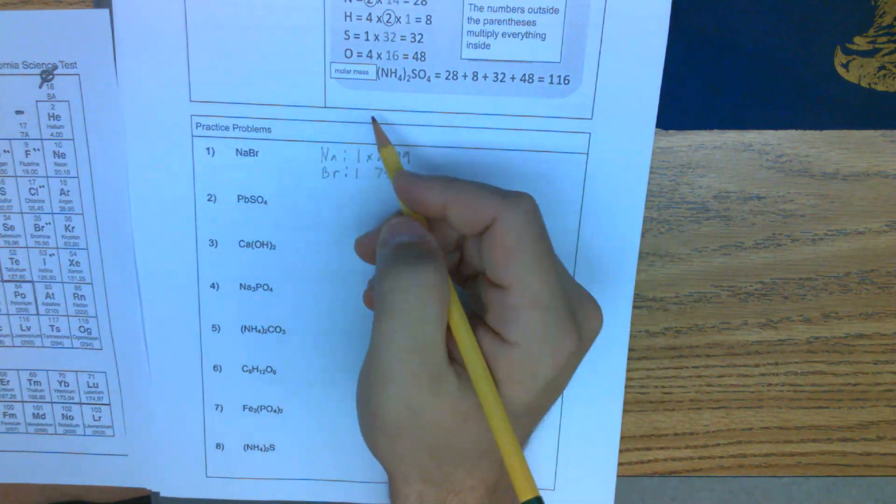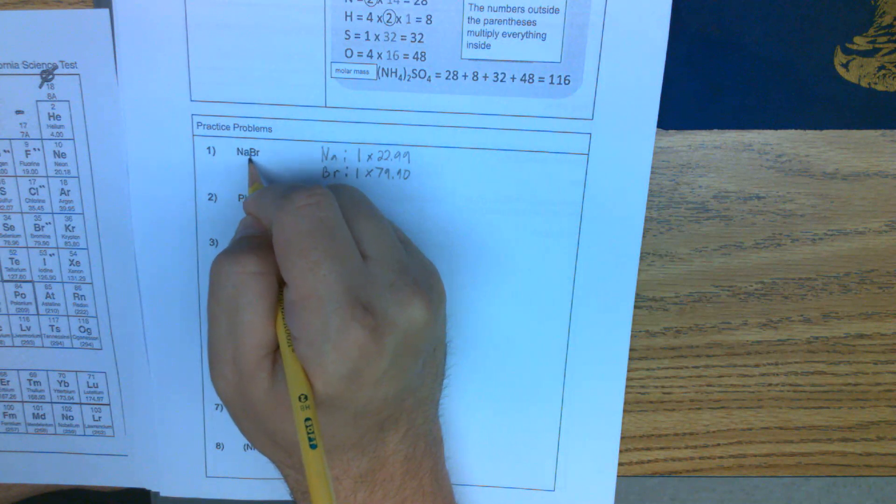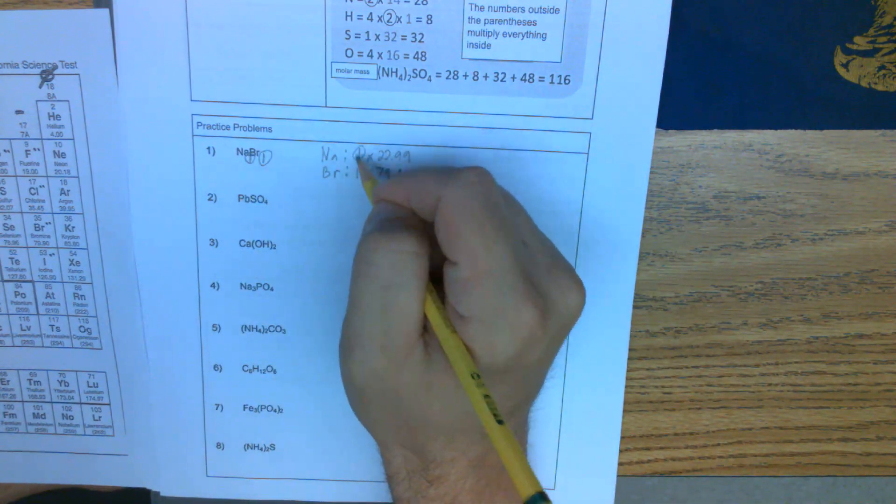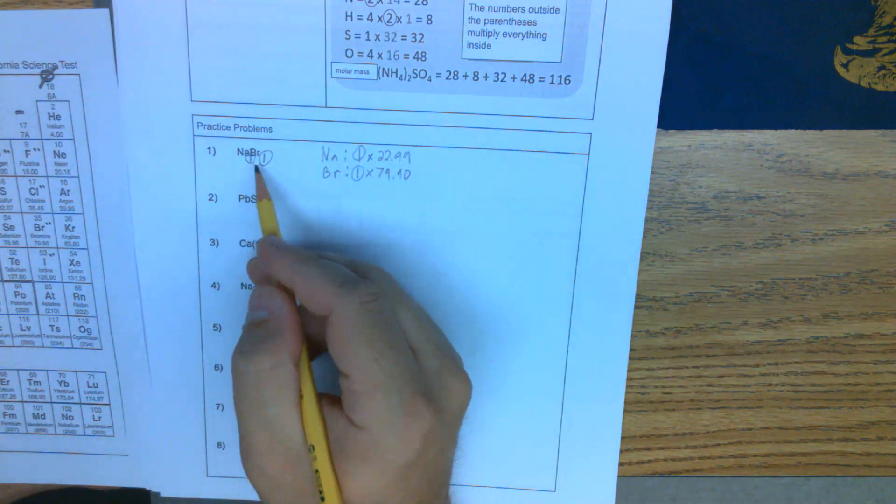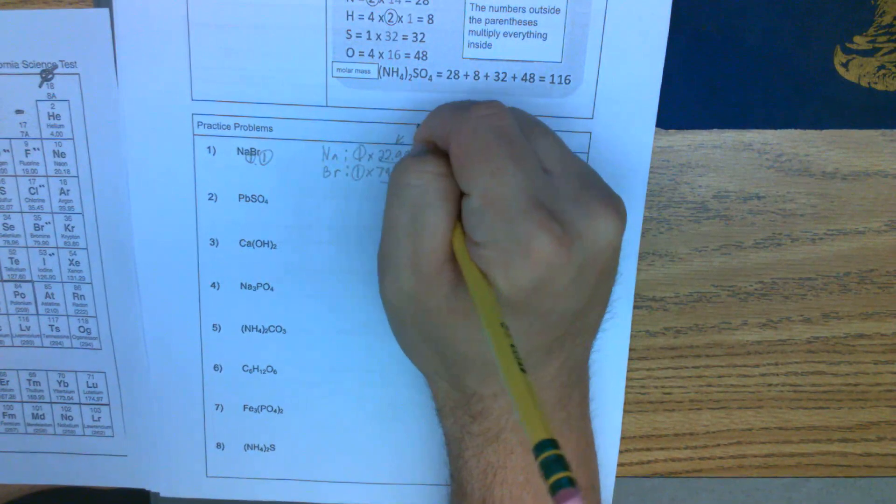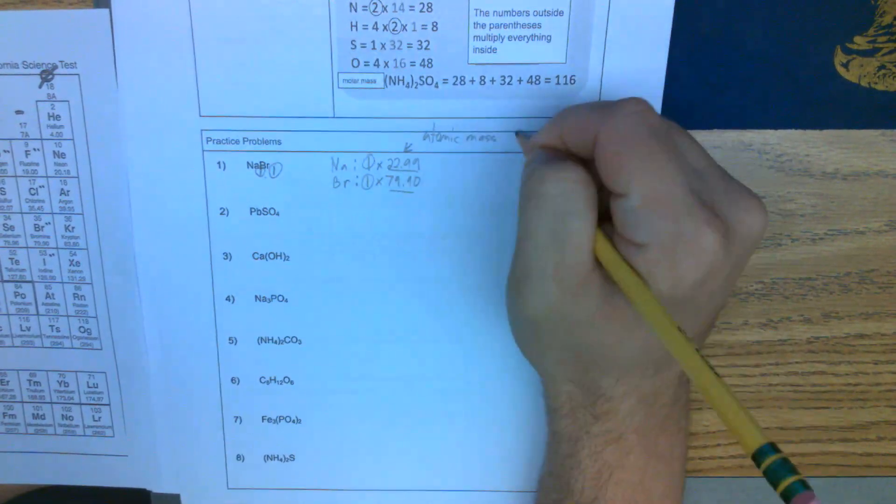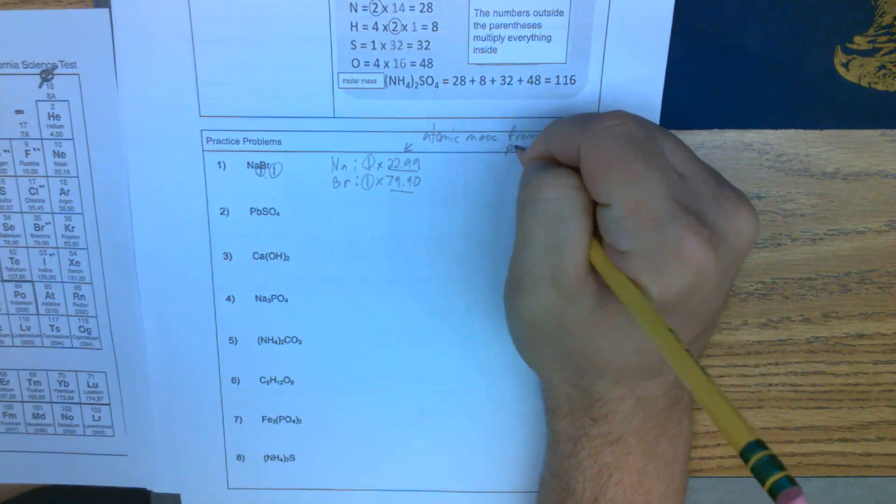We're multiplying by one because there is no number here. We can think of this as one here and one here. These are where we're getting these numbers. So one Na, one Br. These numbers are our atomic mass from the periodic table.